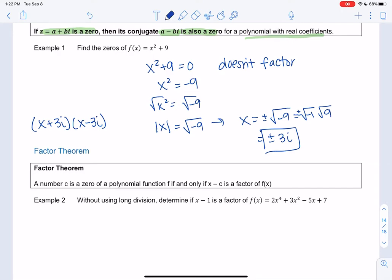So the rule for factors, the reason I came up with that, is if c is a 0, then x minus c is a factor, and vice versa. So if x minus c is a factor, then we also know that c is a 0. We've been talking about this for a couple sections, but now we can include imaginary numbers as well.